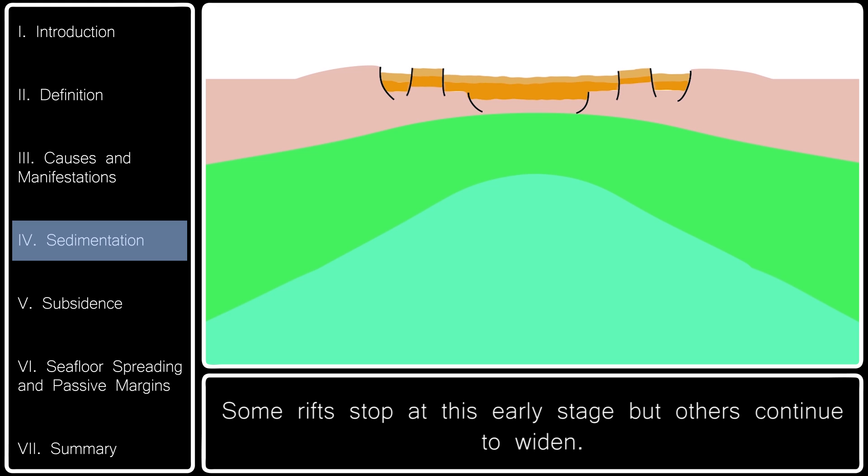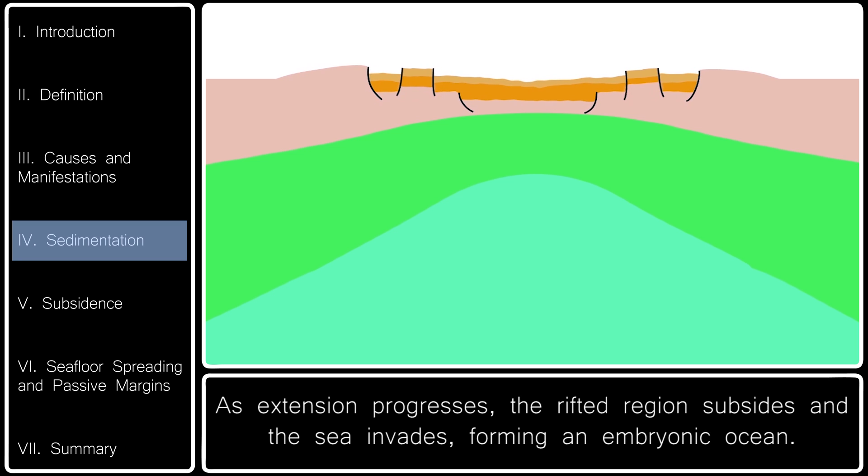Some rifts stop at this early stage, but others continue to widen. As extension progresses, the rifted region subsides and the sea invades, forming an embryonic ocean.